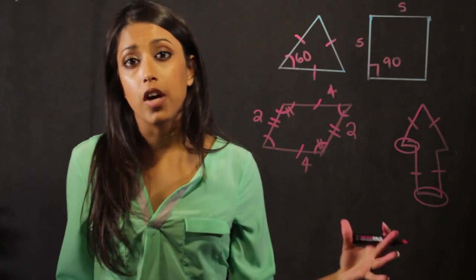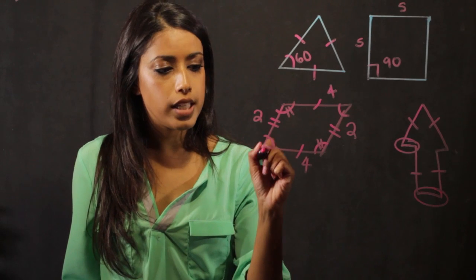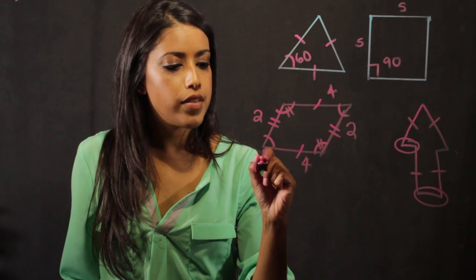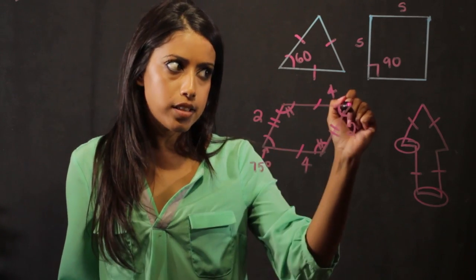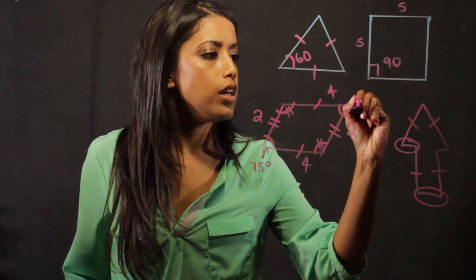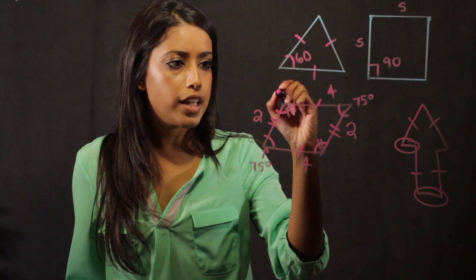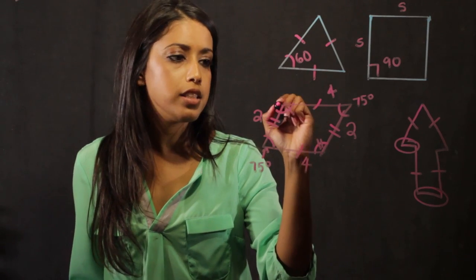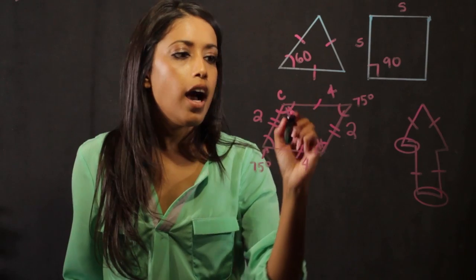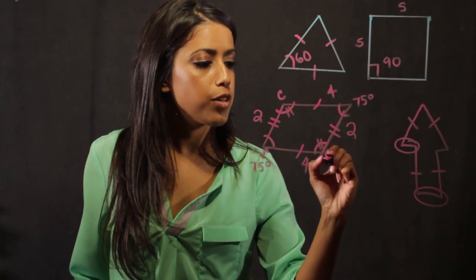So if we wanted to solve a problem, let's just take an example. Let's say that this angle here is 75 degrees. That means that this angle over here is also 75 degrees. And I need to solve for the angle here and how much is that angle. So if I label this C, I know this is going to be C because they're congruent.